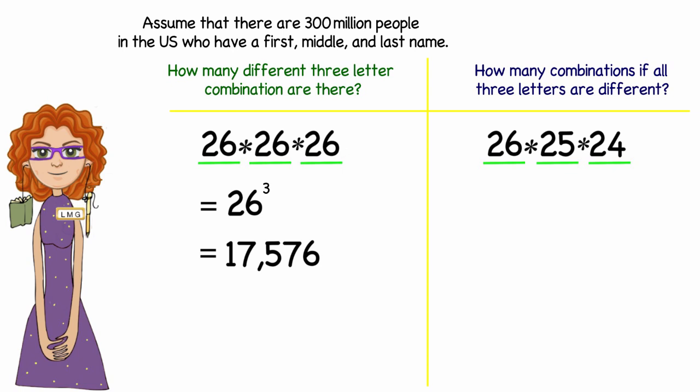And I would need to multiply those out to find out the total. So that would be 26 times 25 times 24, or 15,600.